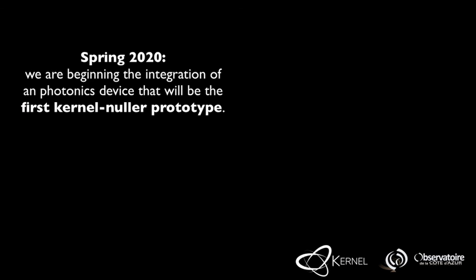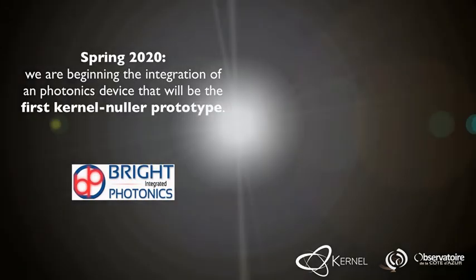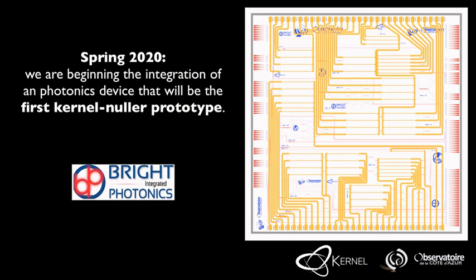In the year 2020, the kernel team is preparing to integrate and test the first ever kernel nuller prototype that was manufactured as an integrated optics device. For this, we are teaming up with the company Bright Photonics that oversees the manufacturing of a component that followed our specifications. Now, this work is only beginning, but results are to be expected before the end of the year 2020.